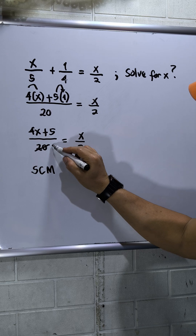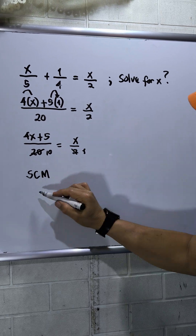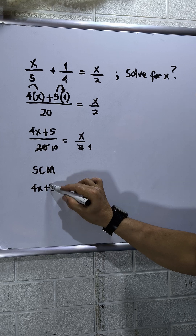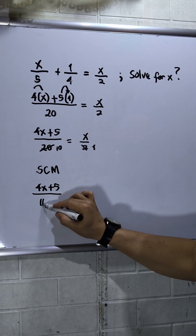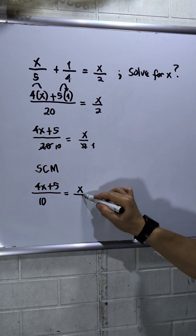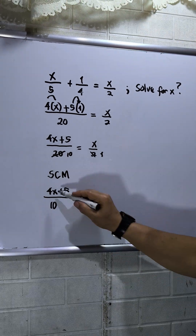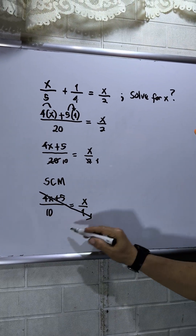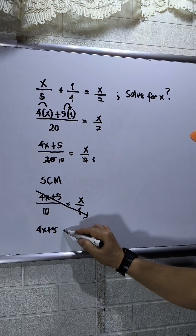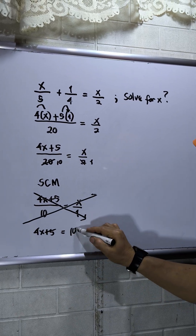I will divide by 2: 20 divided by 2 is 10, divided by 2 is 1. So I have now 4x plus 5 over 10 is equal to x over 1. Then cross multiply: 4x plus 5 is equal to 10 times x, which is 10x.